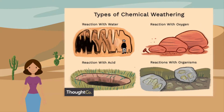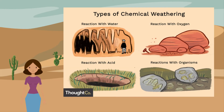Chemical weathering is most effective in hot, wet climates. The most common forms are: solution weathering, where rock minerals dissolve in rainwater; oxidation, where minerals react with oxygen; and hydration, where minerals absorb water. Carbonation causes weathering in carboniferous limestone areas.